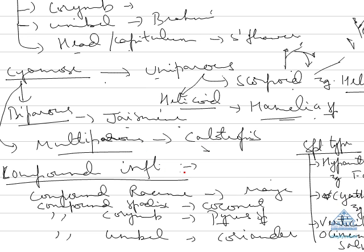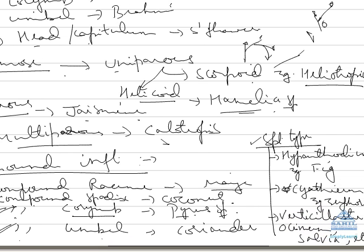Now coming to the compound inflorescence. Compound inflorescence which is group of simple type of inflorescence. For example, compound raceme we have in maize plant where we have tassel, group of female flower and male flowers. Then comes compound spadix, example in coconut. Compound corymb, example in Pyrus, Malus or apple, pear. Compound umbel example coriander, Eryngium or dhania. So two are very important: compound corymb and compound umbel for PMT point of view.